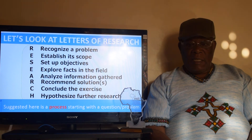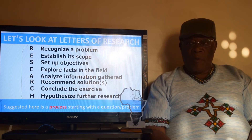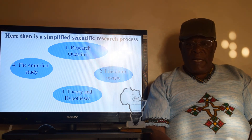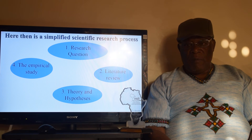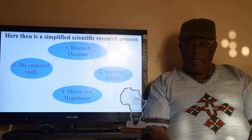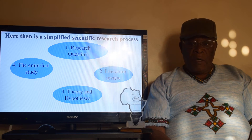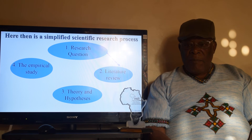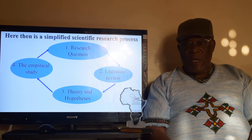You can see that we are suggesting a process that starts with a question or a problem. Here is a simplified scientific research process. One, it starts with a research question — the problem. Two, you do a literature review. Three, you do theory and hypothesis. And four, the empirical study. This is the typical research process going around in circles.